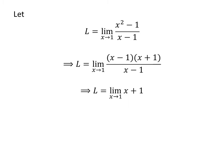Cancelling out the common factor x minus 1 in the numerator and the denominator gives us L is the limit of x plus 1 as x approaches 1.